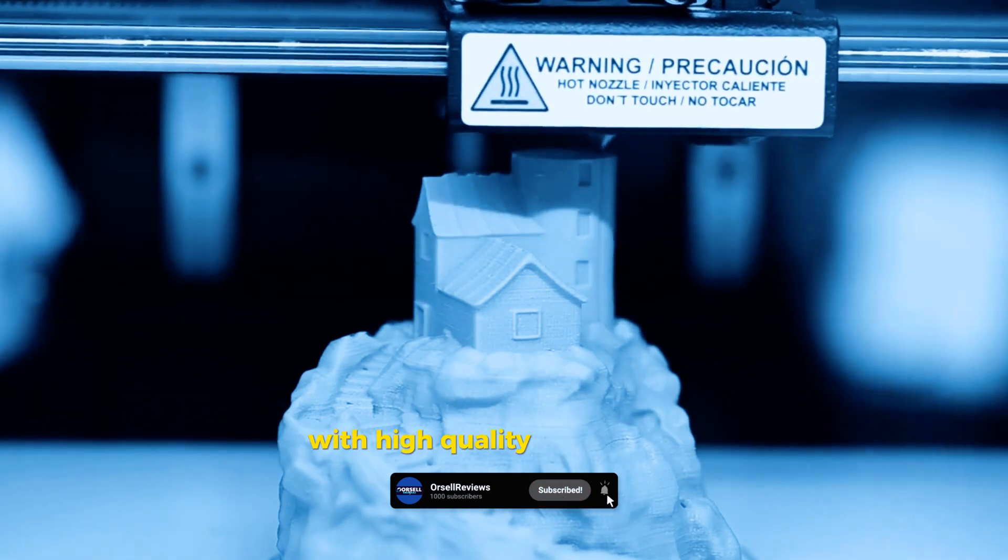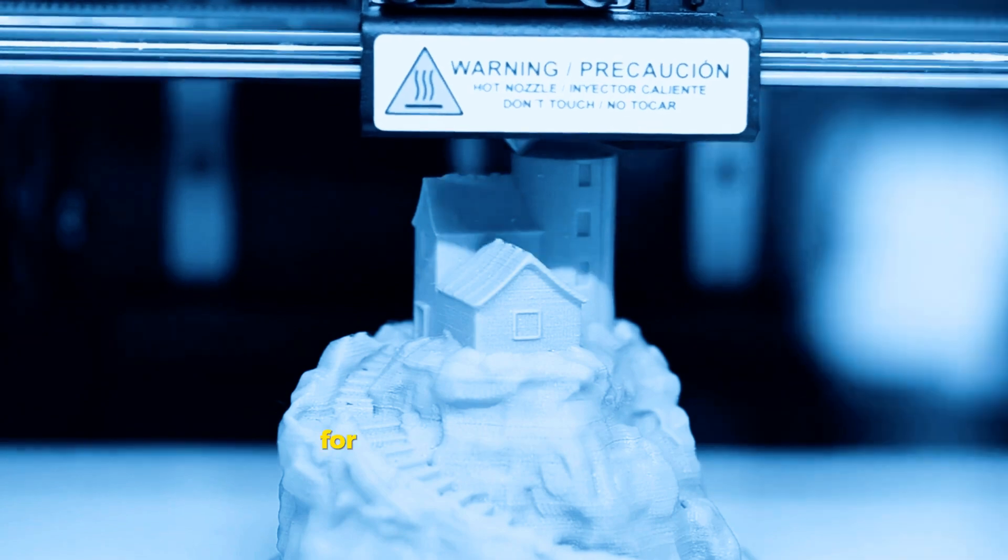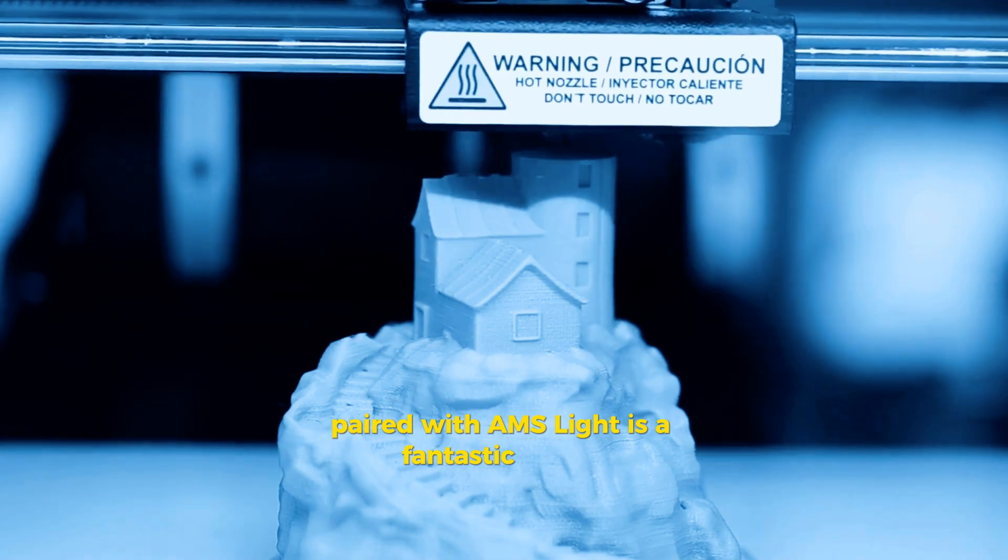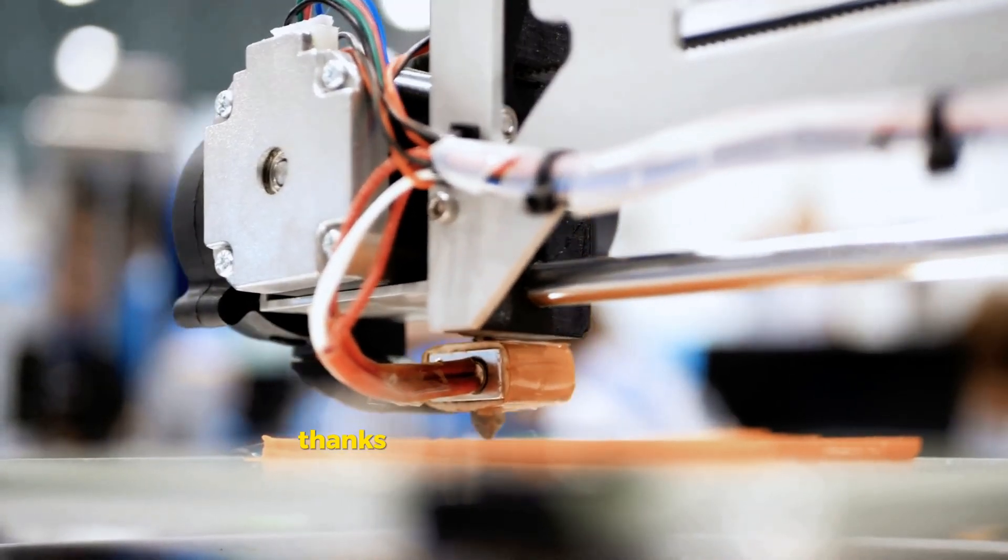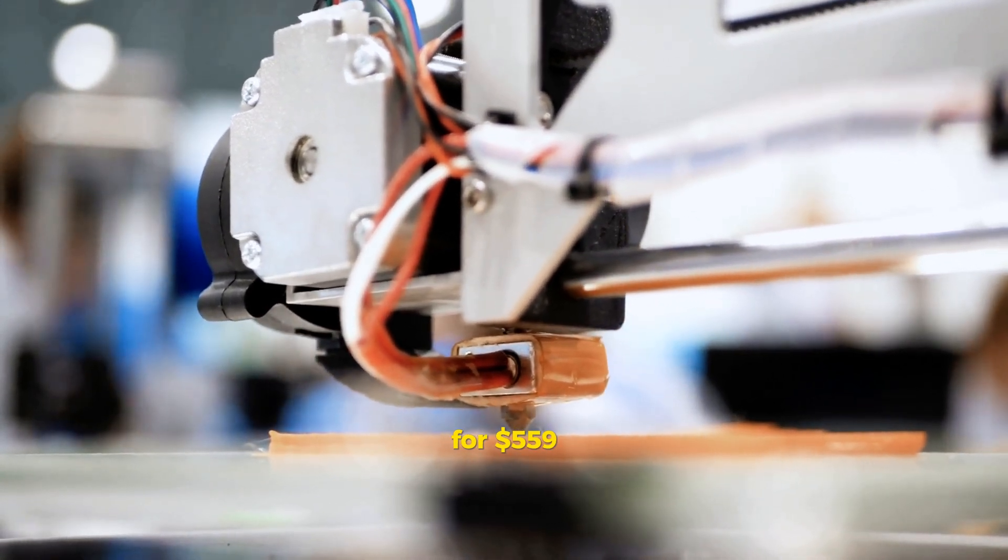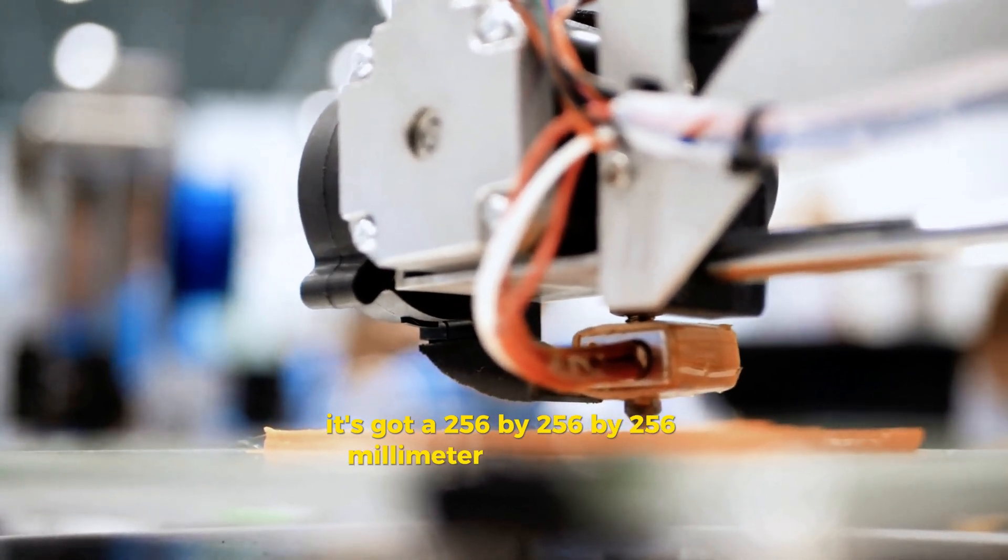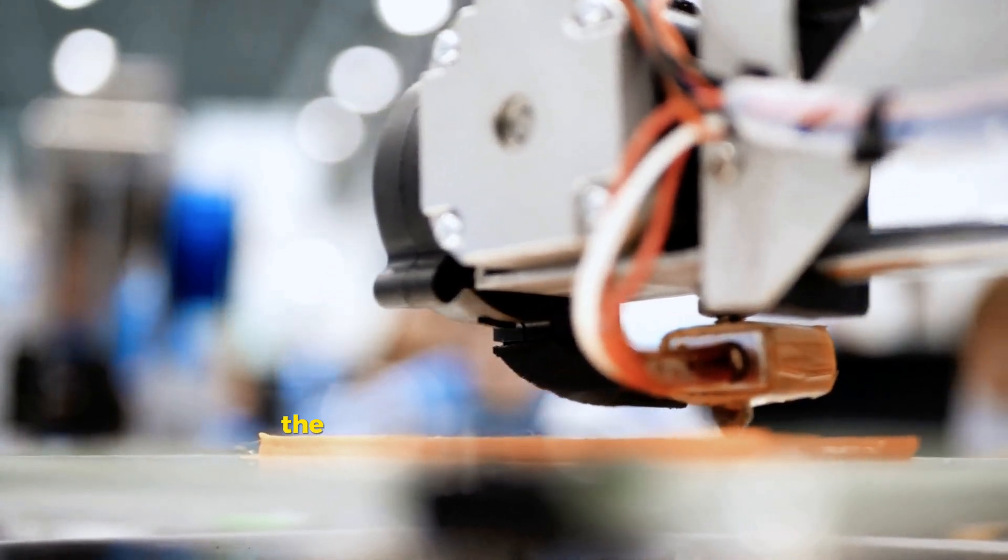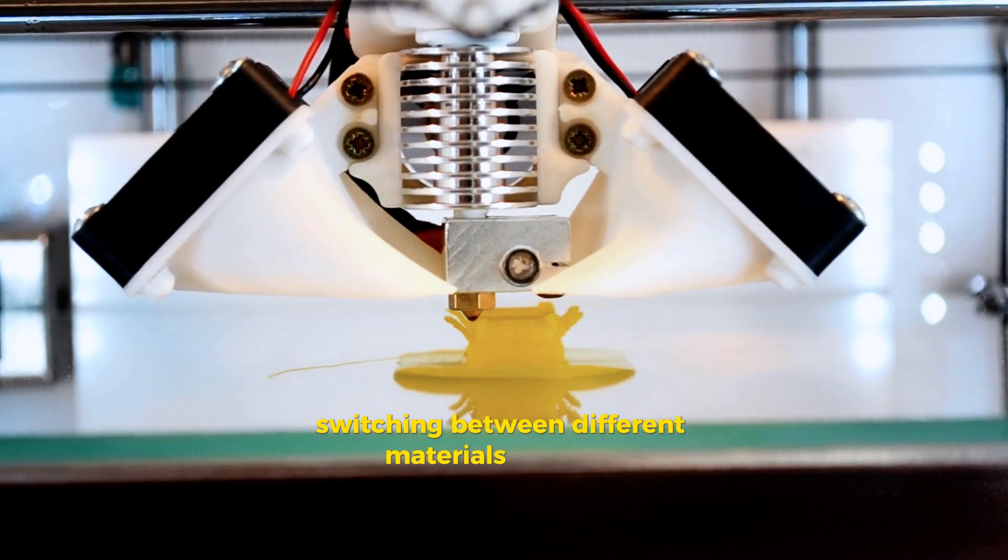For those into dual extrusion, the Bamboo Lab A1 paired with AMS Light is a fantastic choice. This combo lets you print with four different filaments thanks to the AMS Light system. For $559, it's got a 256 by 256 by 256 millimeter build volume, automatic bed leveling, and noise reduction. The toollessly replaceable hot end makes switching between different materials a breeze.